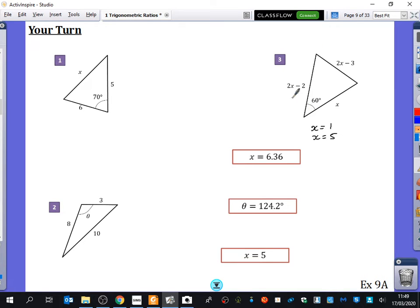Yeah, if x is equal to 1, this side would be 0 and this side would be minus 1 and this side would be 1, which is obviously not a triangle. So x cannot be equal to 1, hence me just having the answer of x equals 5 for that.